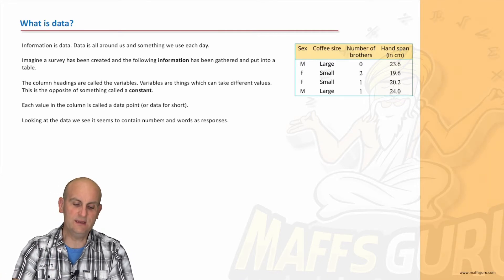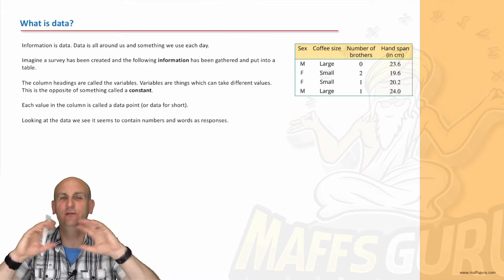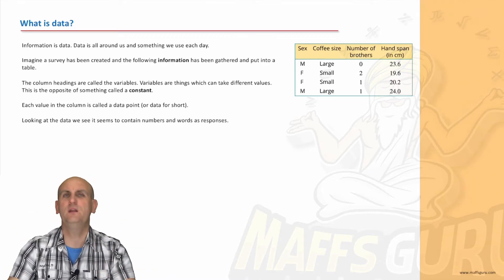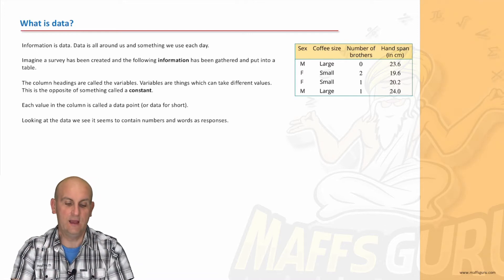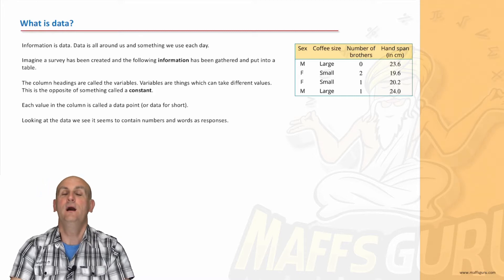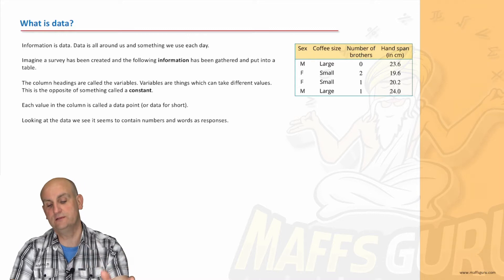So what is data? Well, information is data and it is all around us. Everywhere we look, we're seeing data. But I'm going to narrow it down for just what we're doing with general maths. Let's imagine a survey has been created. I've taken four people randomly off the street. I know, that's weird.